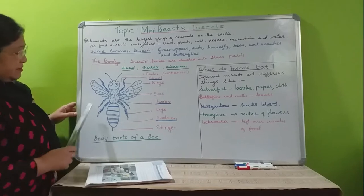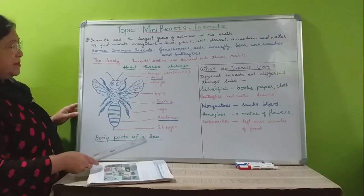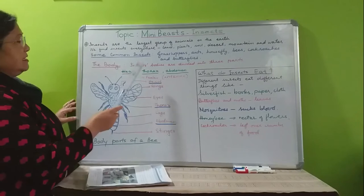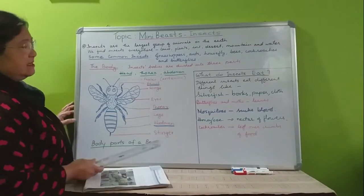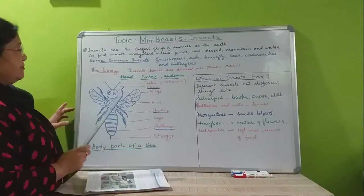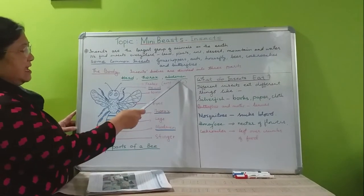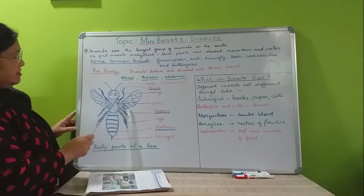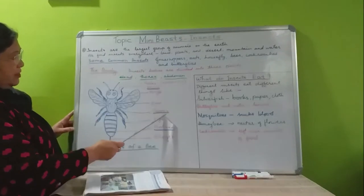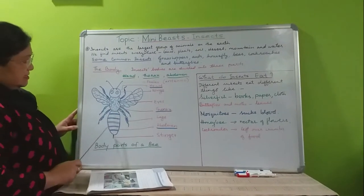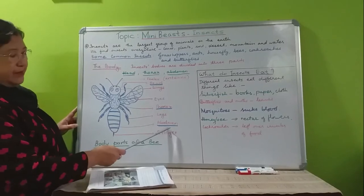Here I have drawn a picture of a honeybee. Body parts of a bee — now let's see. The insect's body is divided into three parts: the main three parts are head, thorax, and abdomen. This part is called head, this middle part is called thorax, and this lower or last part is called abdomen.